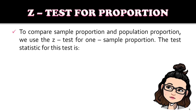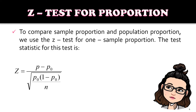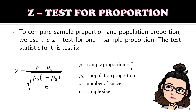To compare sample proportion and population proportion, we use the Z-test for one sample proportion. The test statistic formula is: Z equals P-hat minus P-sub-O, divided by the square root of P-sub-O times 1 minus P-sub-O divided by the sample size N. Here, P-hat is the sample proportion equal to X over N, where X is the number of successes and N is the sample size, and P-sub-O is the population proportion.